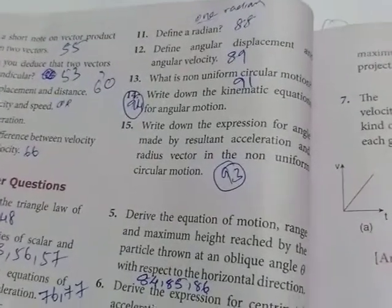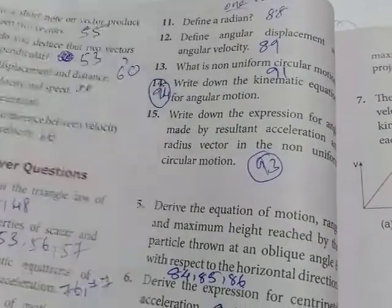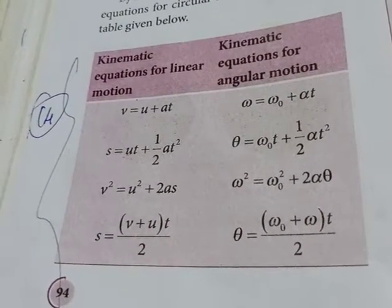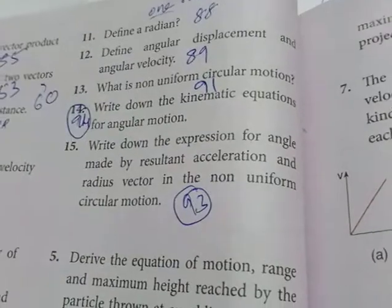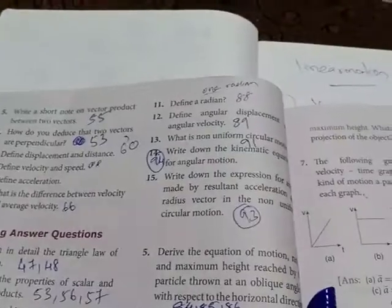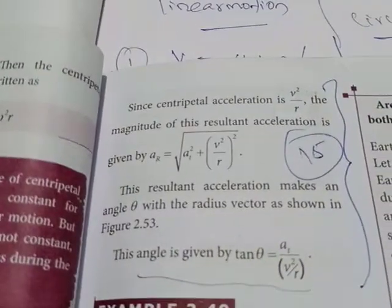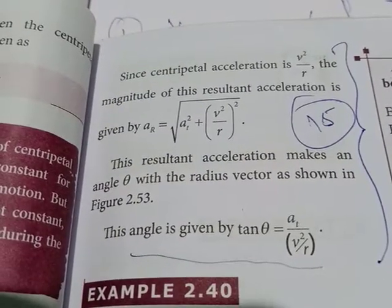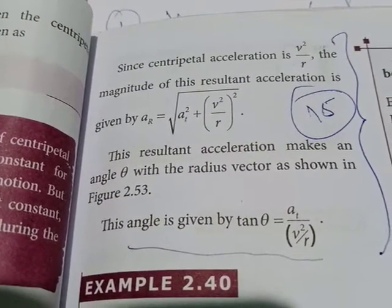Question number 14: write down the kinematic equations for angular motion — page number 94, the red-colour table with those four equations. Question number 15: write down the expression for the angle made by the resultant acceleration and the radius vector in non-uniform circular motion — page number 93. Learn those two expressions.